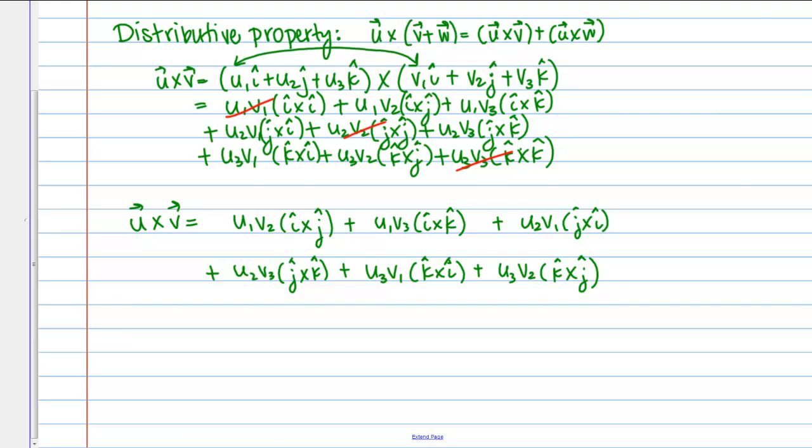For this next step, I simply need to remember the cross products of the coordinate unit vectors. So for example, if you recall, i cross j is k, i cross k is negative j, j cross i is negative k, j cross k is i, k cross i is j, and then finally k cross j is negative i.